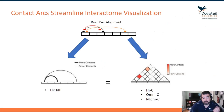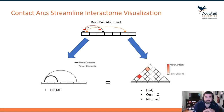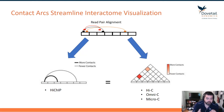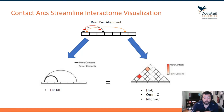We can also visualize the interactome through contact arcs, where at the top I'm showing the read-pair alignment to the reference genome, and below, contact arcs show a stronger signal between region 1 and region 3 than between region 1 and region 6. This is equivalent to the contact matrices, where bright spots reflect more contacts and duller spots reflect fewer contacts.